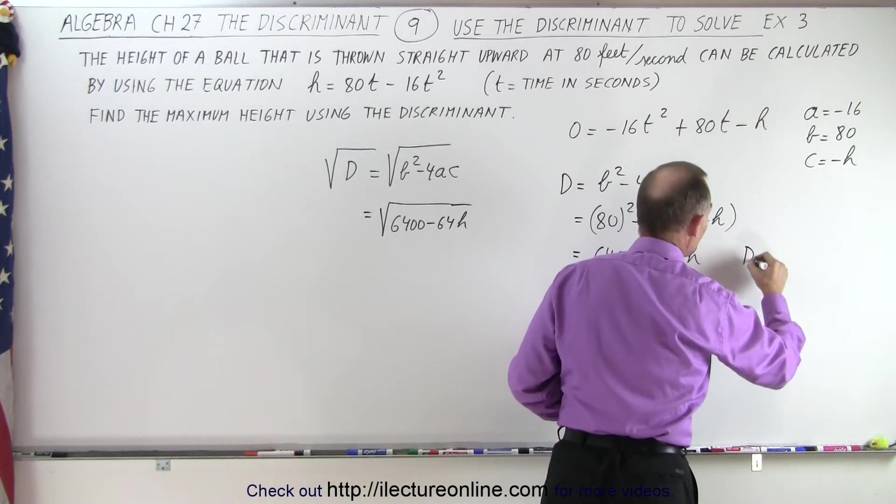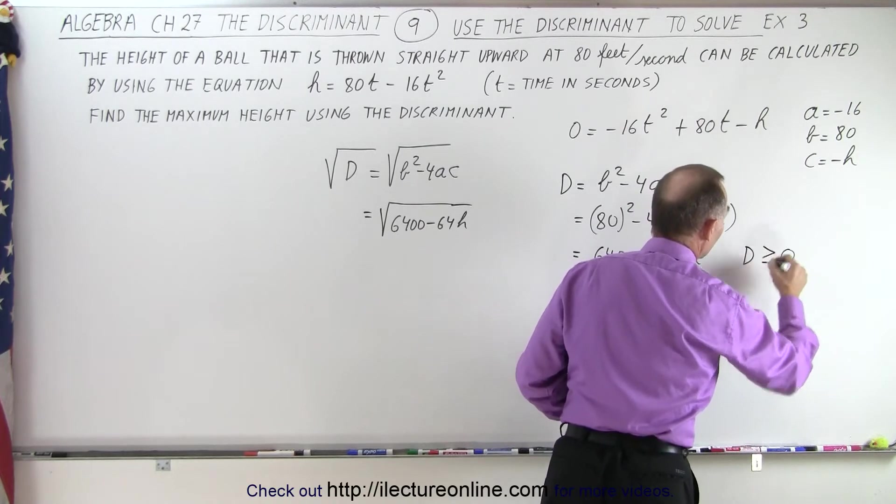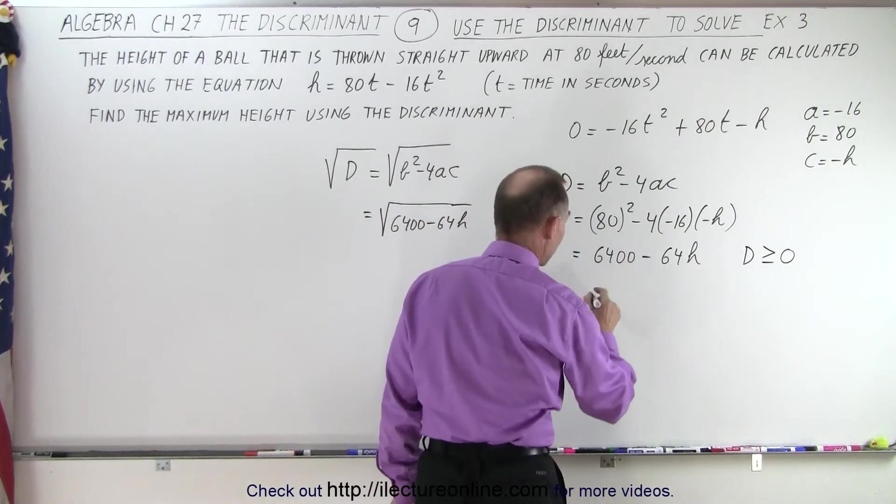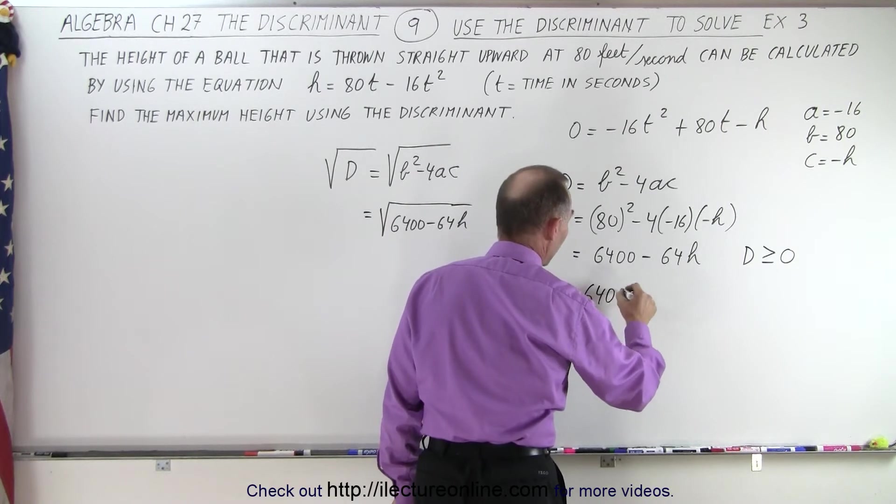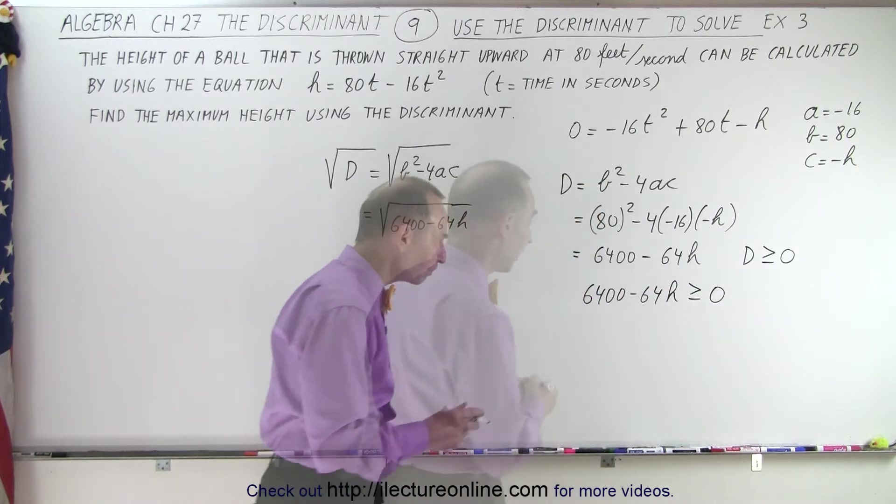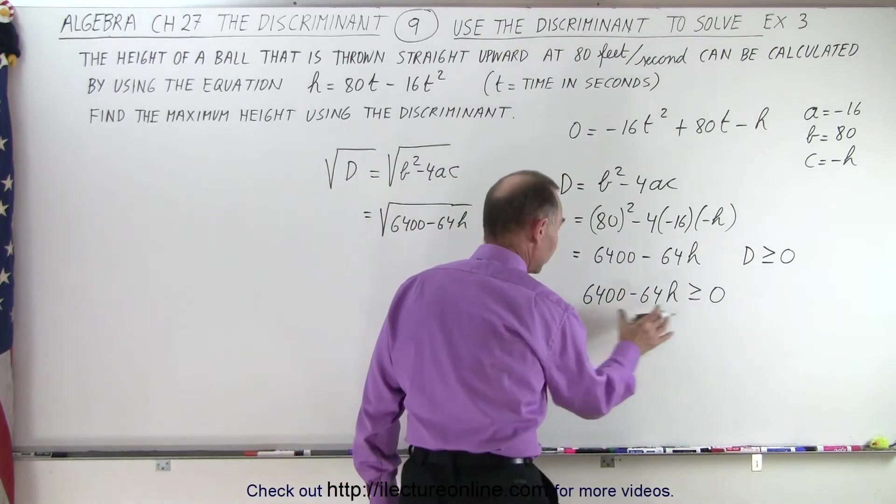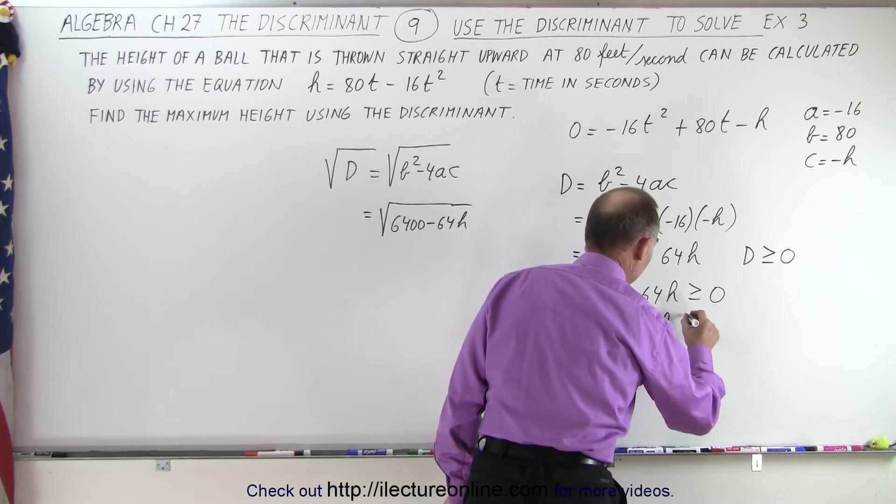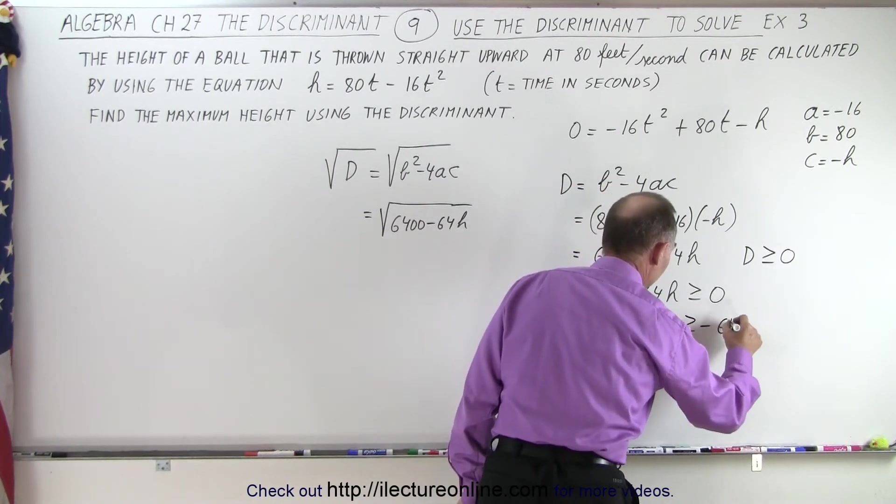In other words, we know that D must be greater than or equal to 0 in order to have a real solution, which means that 6400 - 64h must be greater than or equal to 0. Now moving this over to the other side, we end up with -64h ≥ -6400.